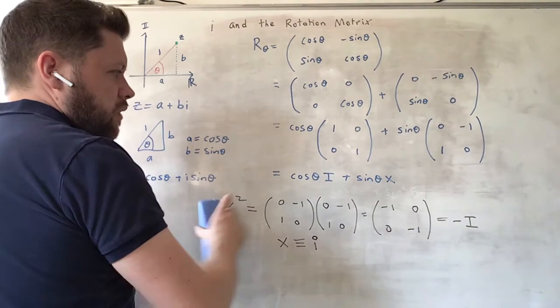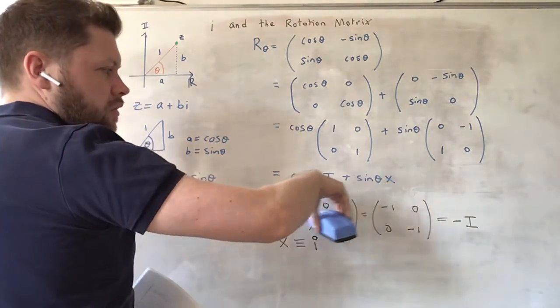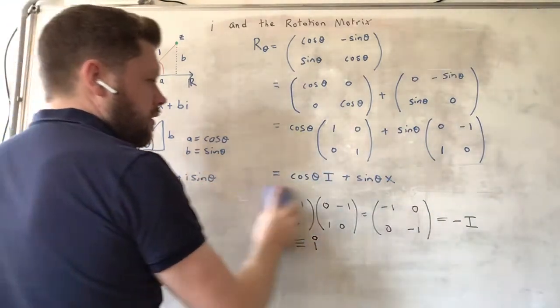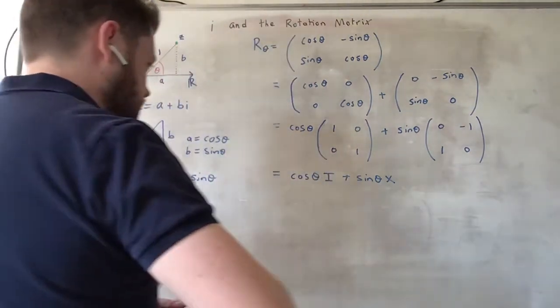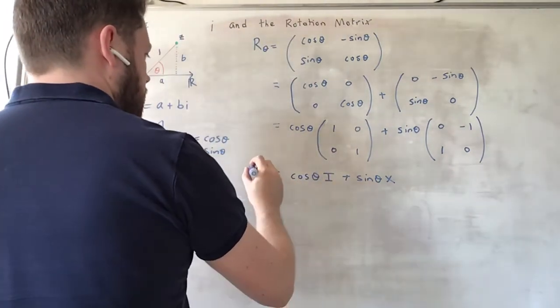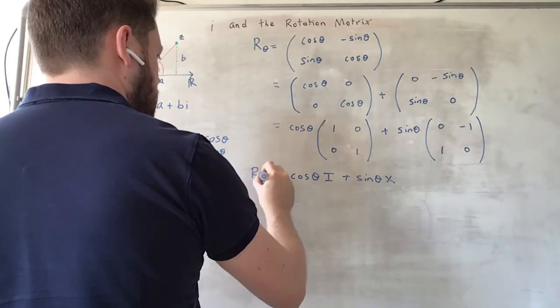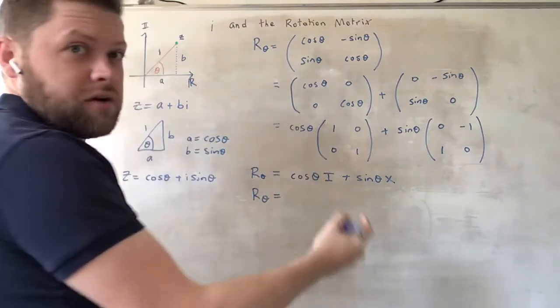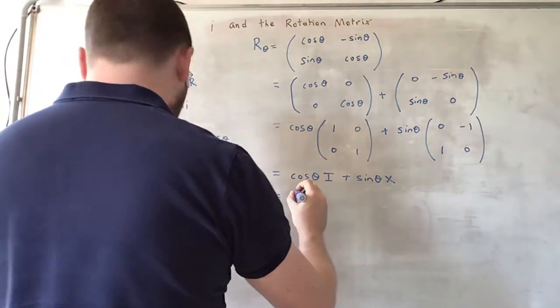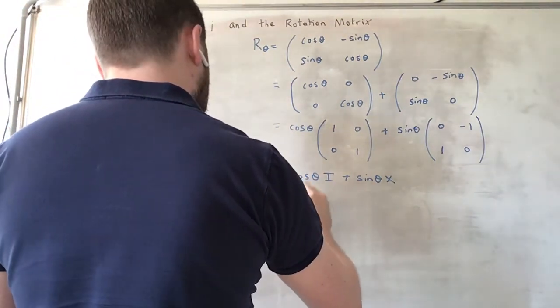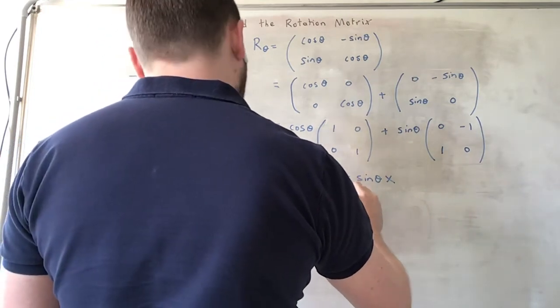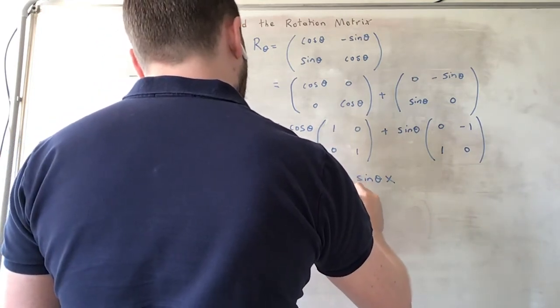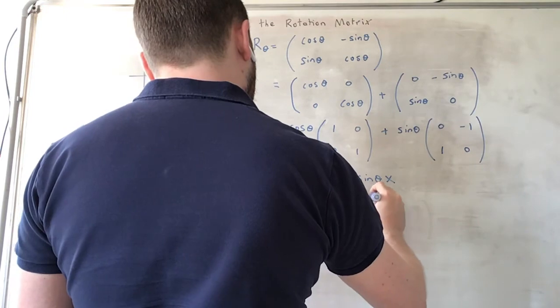So we can then rewrite our equation using our new notation. So we can write that R_θ, our rotation matrix, is equivalent to I cosine theta plus î sine theta.